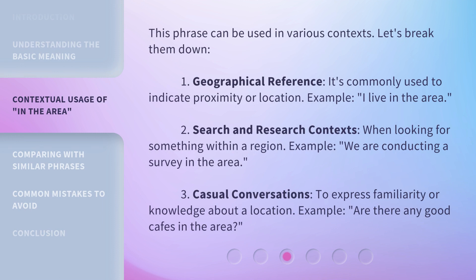This phrase can be used in various contexts. Let's break them down. First, geographical reference: it's commonly used to indicate proximity or location — for example, 'I live in the area.' Second, search and research contexts: when looking for something within a region — for example, 'we are conducting a survey in the area.' Third, casual conversations: to express familiarity or knowledge about a location — for example, 'are there any good cafes in the area?'